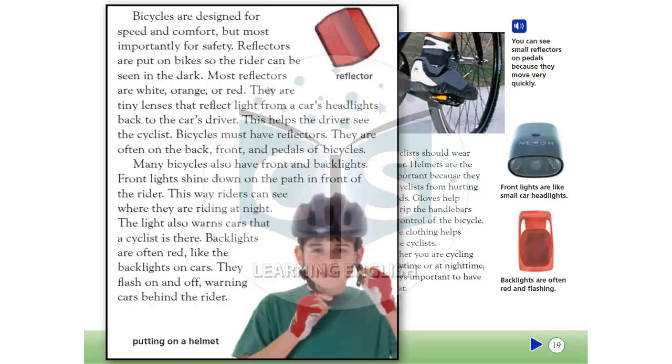Most reflectors are white, orange, or red. They are tiny lenses that reflect light from a car's headlights back to the car's driver. This helps the driver see the cyclist. Bicycles must have reflectors. They are often on the back, front, and pedals of bicycles.